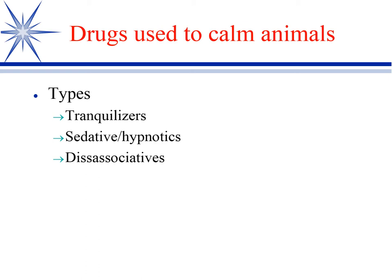When we're talking about drugs used to calm animals or manage them, we break them down into three categories: tranquilizers, sedative hypnotics, and dissociatives.